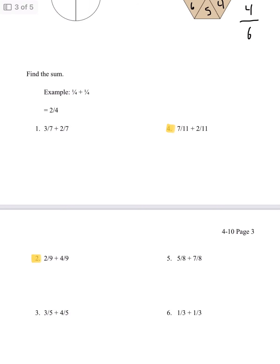Next, it says find the sum, which is the answer. Our example, we have 1 fourth plus 1 fourth. And when we add it, we get 2 over 4 as our answer. So how they got this is, we don't add the denominator. We just leave it as 4, and we only add the numerator. 1 plus 1, which is how we got 2.